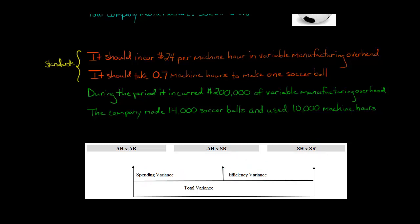So our actual hours, how many hours did we spend? 10,000 machine hours. Now, what was the actual rate per machine hour? We don't have that in the given information, but we know the total cost of $200,000, so we can divide that by 10,000, and that's $20, the actual rate.